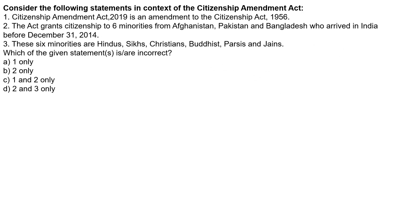The first question from the current affairs section: Consider the following statements in context to the Citizenship Amendment Act. Statement one: The Citizenship Amendment Act 2019 is an amendment to the Citizenship Act 1956. Statement two: The act grants citizenship to six minorities from Afghanistan, Pakistan, and Bangladesh who arrived in India before December 31, 2014. Statement three: These six minorities are Hindus, Sikhs, Christians, Buddhists, Parsis, and Jains. Which of the given statements is incorrect? Option A: First only; Option B: Second only; Option C: First and Second only; Option D: Second and Third only.